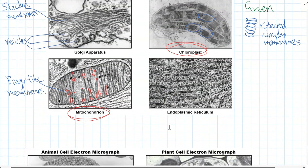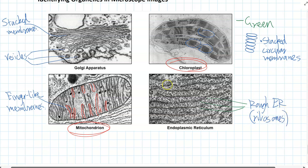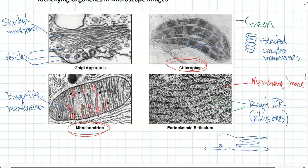Then you've got the endoplasmic reticulum — remember there are two types. If you can see lots and lots of small ribosomes attached to it, that's definitely the rough ER, the rough endoplasmic reticulum. If you can see a whole lot of layers of membrane like a maze, that's the giveaway that it's an endoplasmic reticulum. Once you know it's an endoplasmic reticulum: if it's got the ribosomes, it's rough. But if it just looks like a smooth maze of lots of membranes joining in and out of each other with no ribosomes, that's going to be the smooth ER.